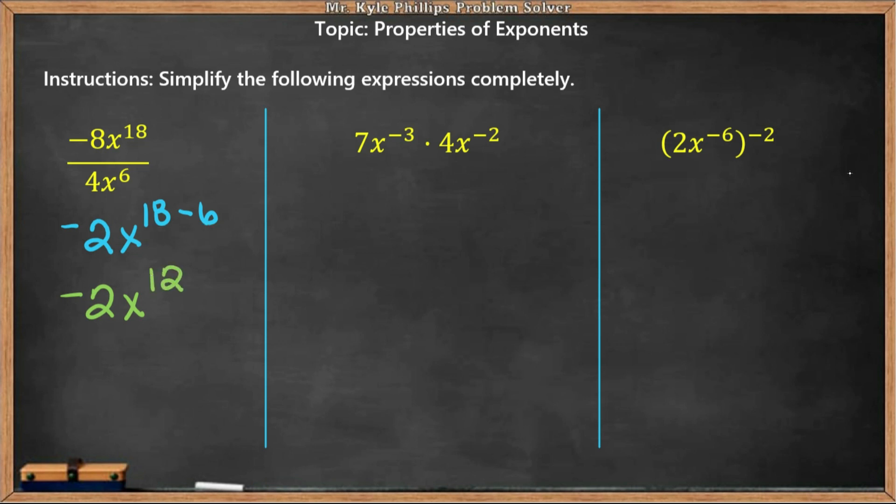So that's going to be that solution over here. When we're multiplying, we're going to multiply our coefficients, and we are going to add our exponents. So 7 times 4, that's going to give us 28, and then we will add our exponents.